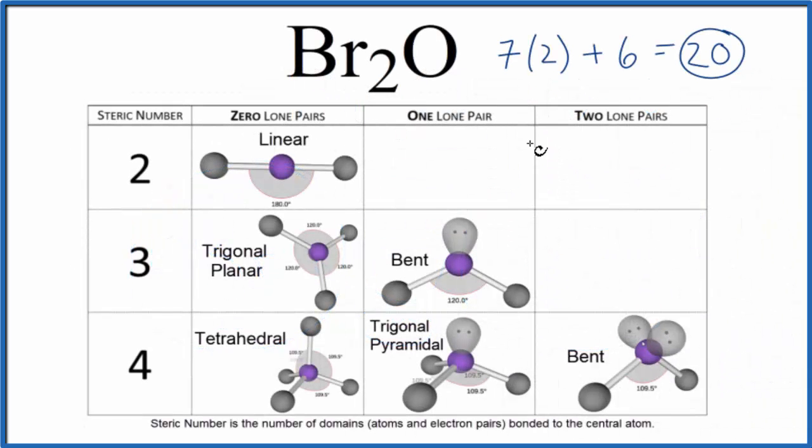So we said we have 4 things attached. That's our steric number, 4. And 2 of them were lone pairs. So if we go over here, we'll have a bent molecular geometry for Br2O. And the bond angle will be somewhere around 109.5.